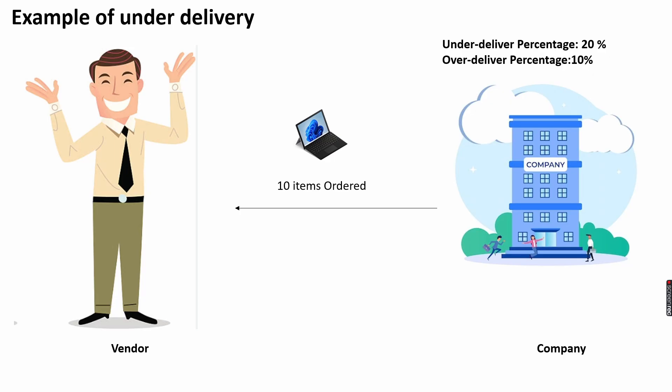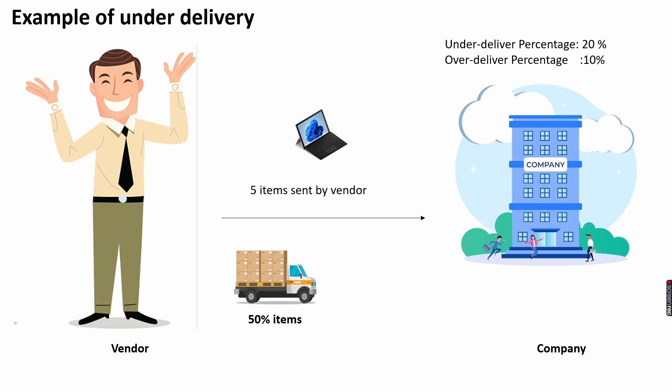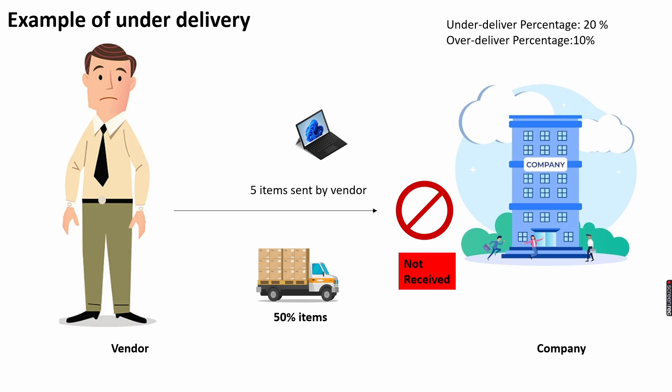By using under delivery and over delivery settings you can stop a vendor from delivering under or over the agreed quantity. Let's take one scenario: we request 10 quantity from the vendor. The company sets under delivery percentage to 20% and over delivery percentage to 10% for this particular purchase order. The vendor sends 50% of the actual order quantity, but since the under delivery percentage is set to 20%, the system will stop this purchase order from being received. Over delivery is the opposite — if you request 10 items and the vendor sends 15, that is an over delivery case.